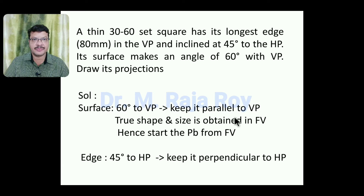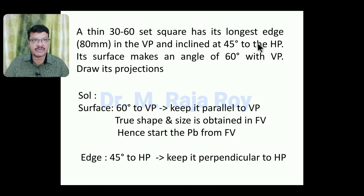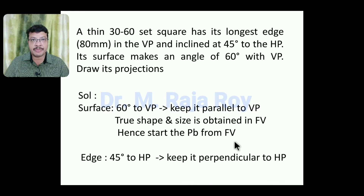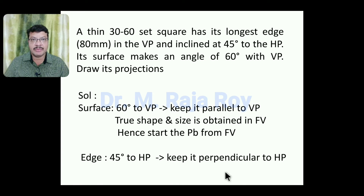After that, we have to project the top view. The longest edge is inclined at 45 degrees to HP. When the edge is inclined to HP, according to standard procedure, we have to keep that edge perpendicular to HP. There are two important points to note: always keep the surface parallel to the reference plane to which it is inclined, and always keep the edge perpendicular to the reference plane to which it is inclined. Based on those two conditions, we decide these parameters about surface and edge. Now we have a clear idea about the simple position.